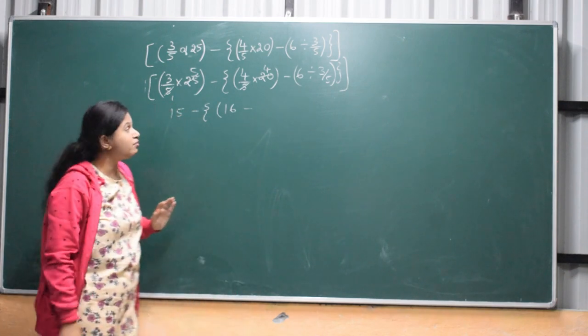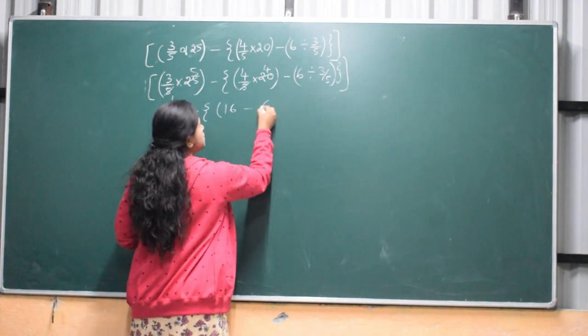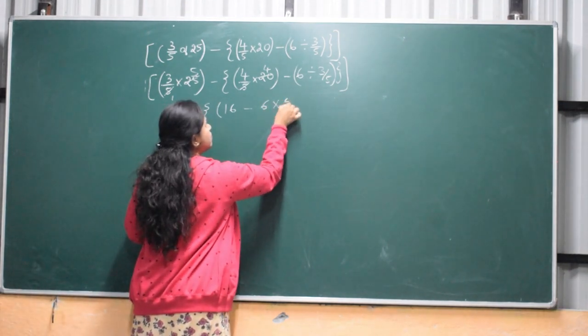If you need to divide it, you need to divide it and take it reciprocally. 6 into 5 by 3.